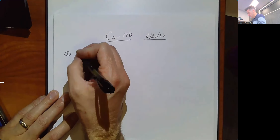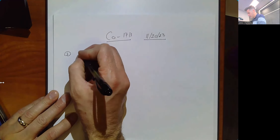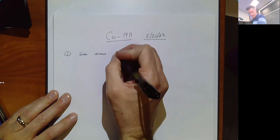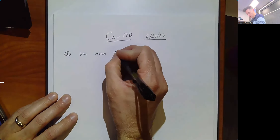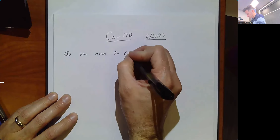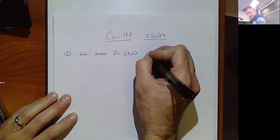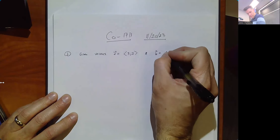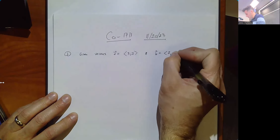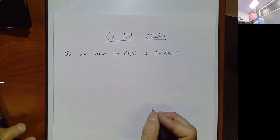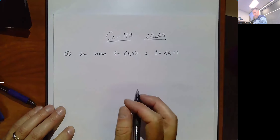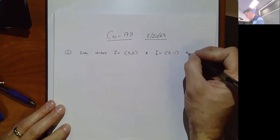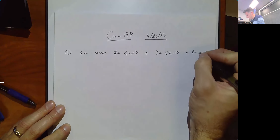Let's say we have vectors A equal to (3, 2), and B equal to (2, negative 1), and C equal to (7, 1).